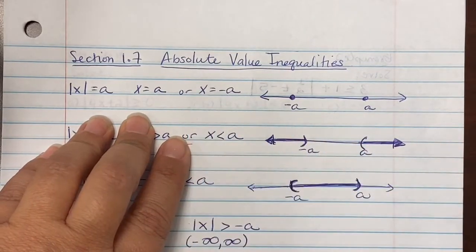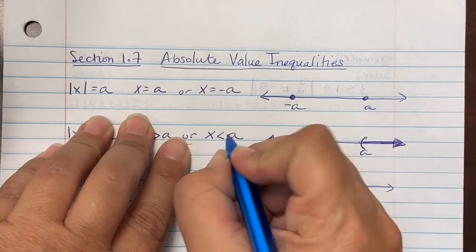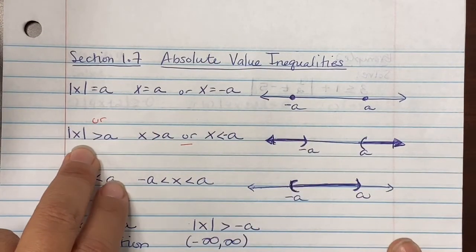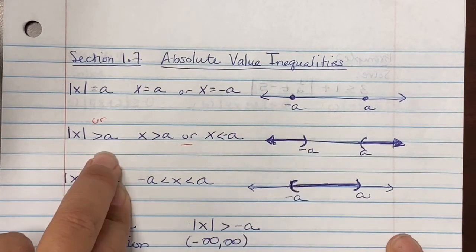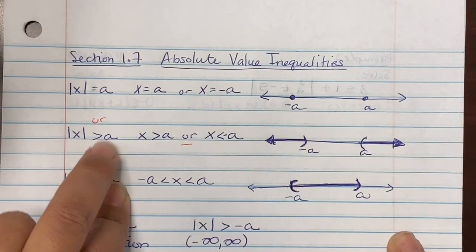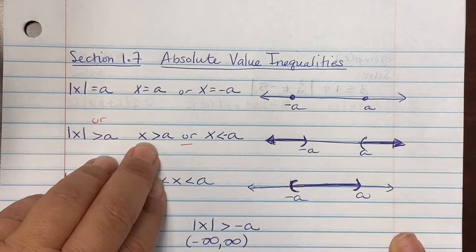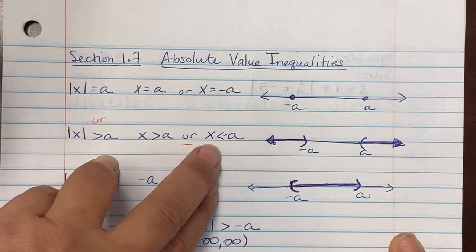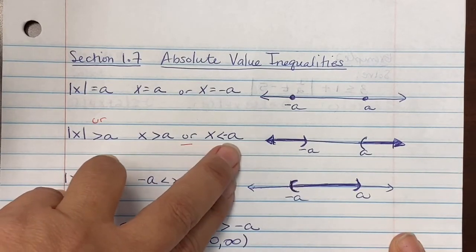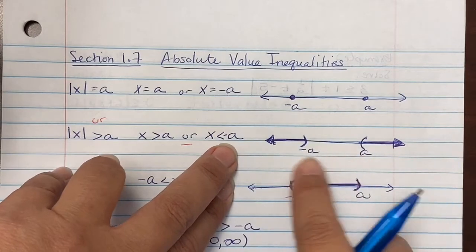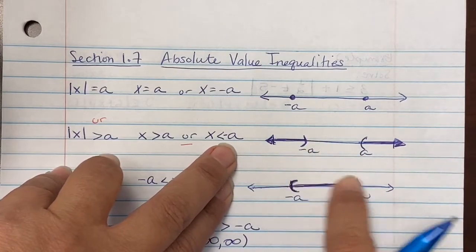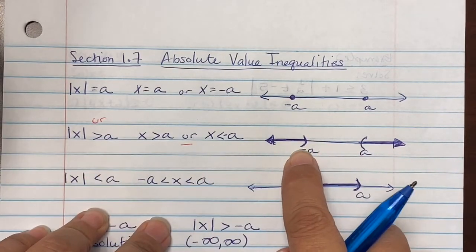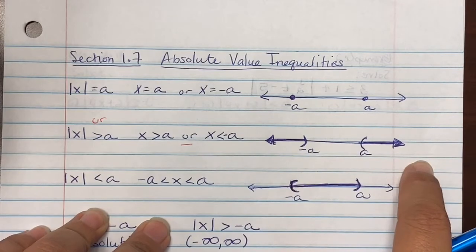Now with the new ones: absolute value of x greater than a is known as our 'or' statement. You write it as x greater than a or x less than negative a. When you graph them on the number line, one goes to negative infinity and the other goes to positive infinity.